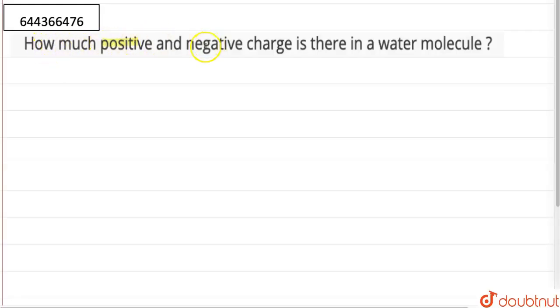How much positive and negative charge is there in a water molecule? As we know, in a water molecule H2O, we have two atoms of hydrogen and one atom of oxygen. Number of protons - first we will calculate the positive charge.